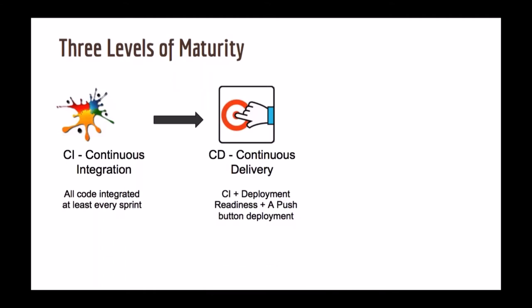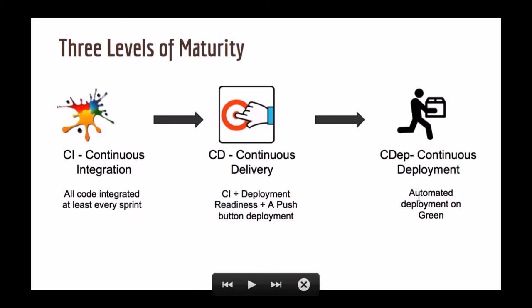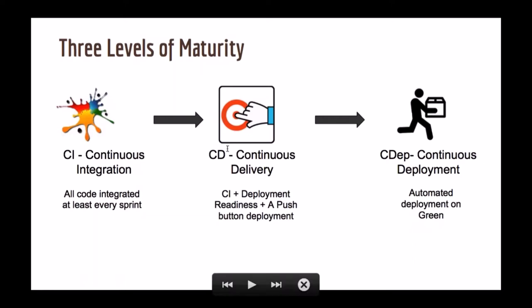From continuous delivery you can extend further: why do I need a human to decide whether something needs to be deployed? When you reach that level of maturity, that is continuous deployment. So the three terms are continuous integration, continuous delivery, and continuous deployment. In continuous deployment, the human push-button step is removed and whenever you have a deployment-ready build it automatically deploys to the customer. When you are in a CD state you can do hypothesis testing, produce value at shorter intervals, and your lead time can go to seconds — doing 10 or 50 deployments as needed.